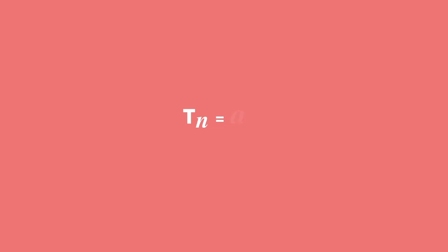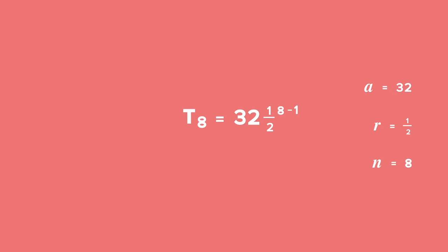Tn is equal to a times r to the power of n minus 1, to calculate the value of the 8th term. From the given sequence, we see that a is equal to 32, and we worked out r is equal to 1 half. To find the value of the 8th term, substitute values for a, r, and n, and simplify.